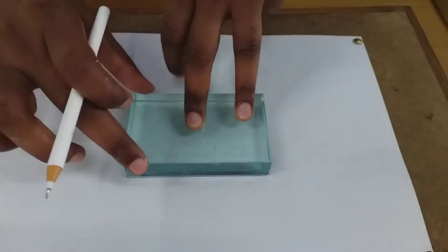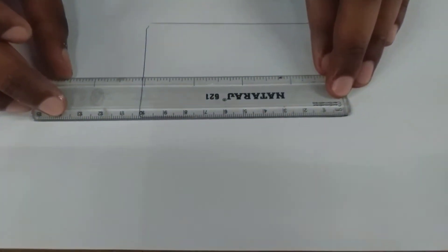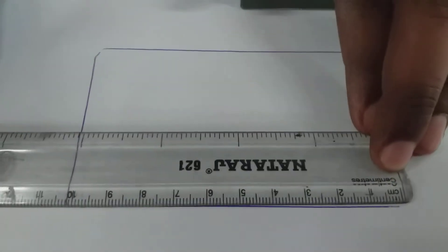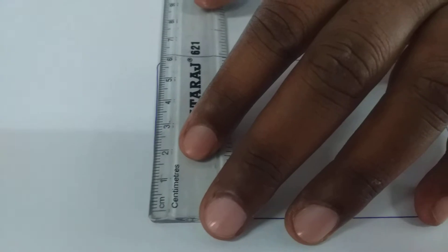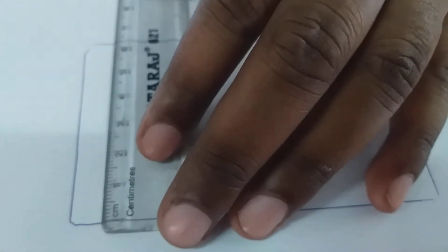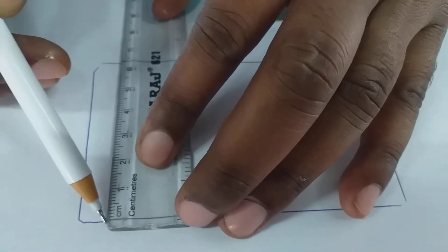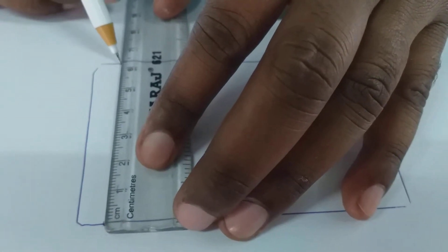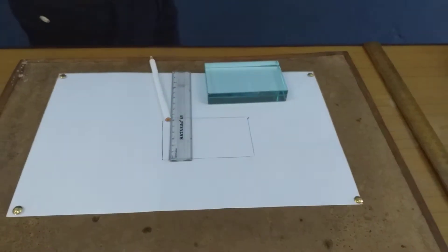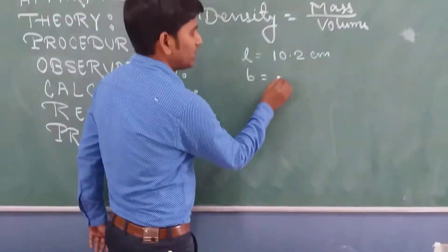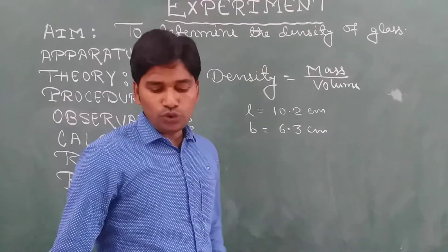As I have taken the outline, we can measure the length from it as well. Similarly, we can measure the breadth. Starting from zero — not from any other point but from zero — we measure to the other side. The breadth is 6.3 centimeters. We will calculate this two or three times and take the average.